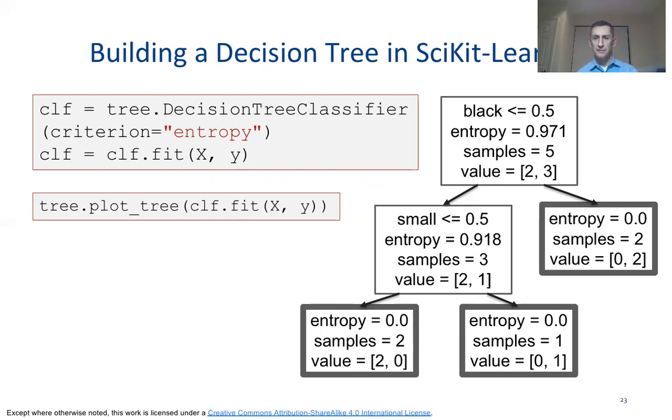You have additional information about the splits that were made. Black at the top, small at the bottom. You see the leaf notes. The leaf notes basically tell us the majority class and when we do prediction they will tell us how to evaluate a new test data point. So very much the same as the previous slides.